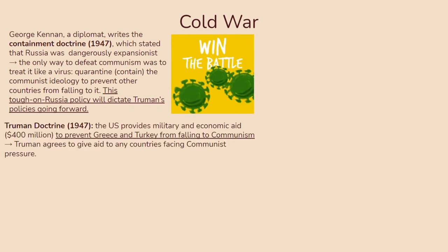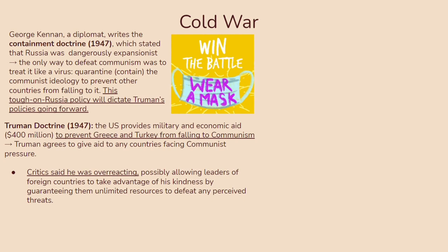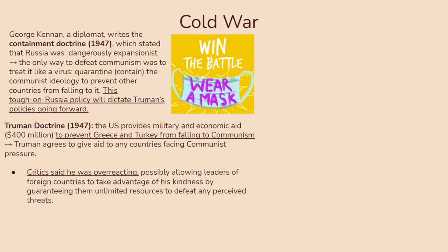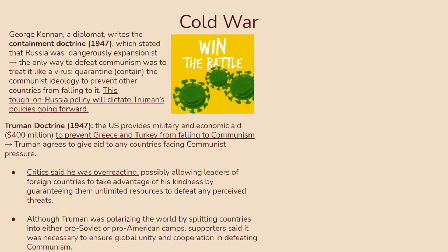This tough-on-Russia policy dictated Truman's policies going forward. You have the Truman Doctrine in 1947, where the US provided military and economic aid amounting to about 400 million dollars to prevent Greece and Turkey from falling to communism — essentially agreeing to give aid to any countries facing communist pressure. Critics said Truman was overreacting, possibly allowing foreign leaders to claim communist pressure even when there wasn't any to get unlimited resources, but supporters said it was necessary to ensure global unity in defeating communism.